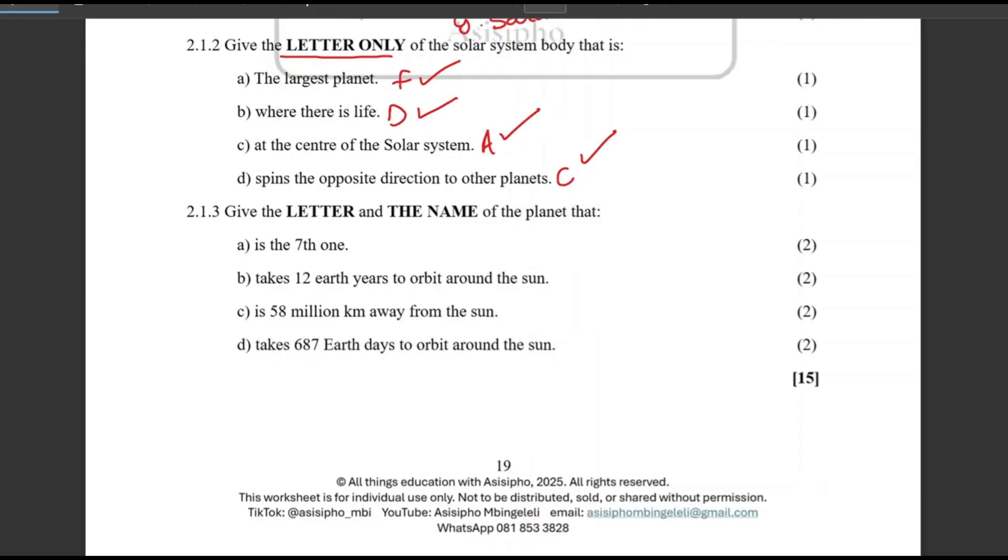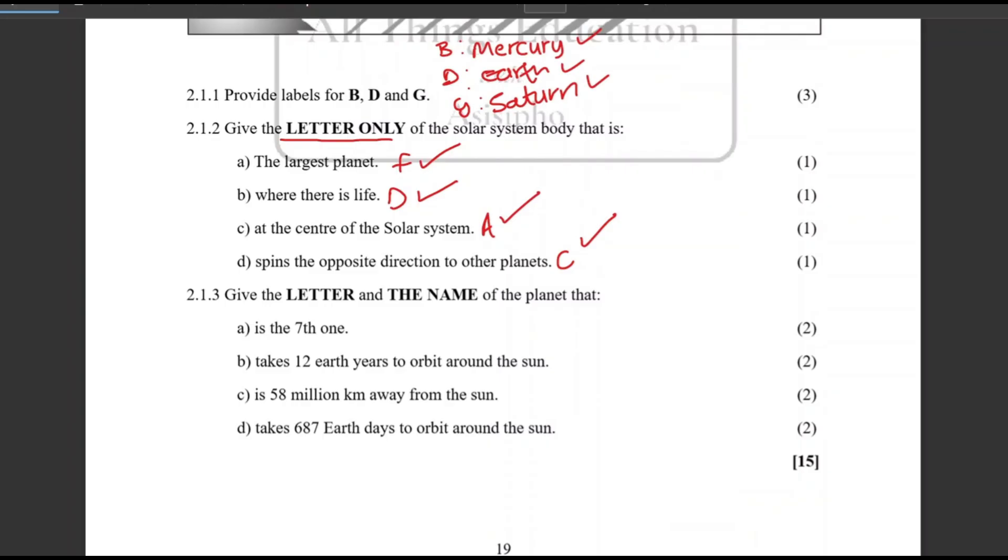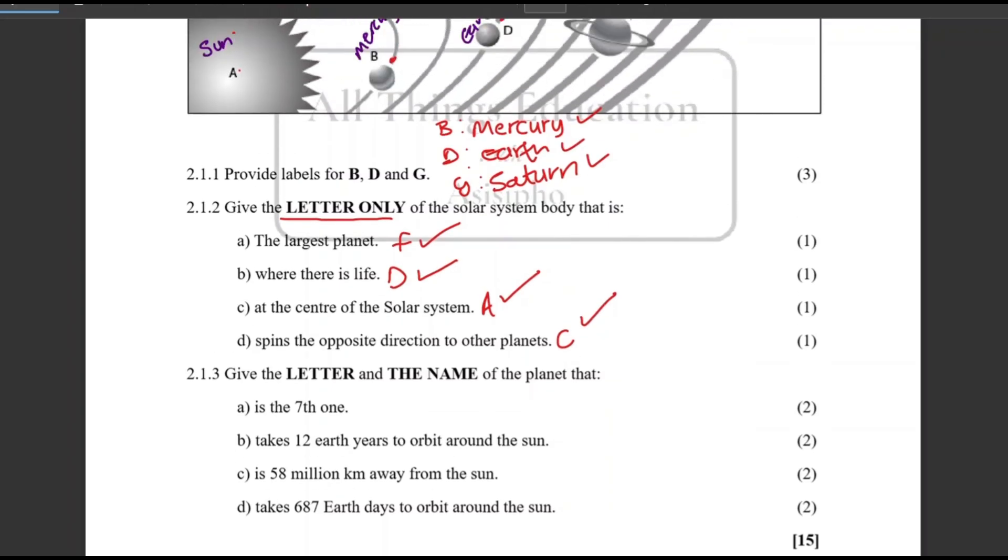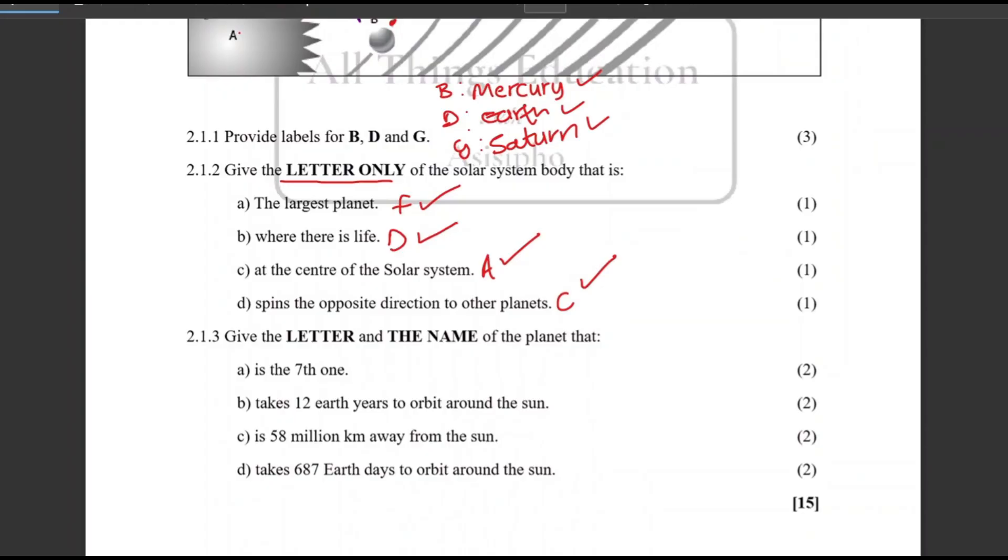For 2.1.3, give the letter in the name of the planet. Let's follow instructions, guys. I need us to read these questions and understand what they require from us. This one is asking us to give the letter and the name. The previous one was asking us to give the letter only. You are asked to give the letter in the name of the planet that is the seventh one. This is easy. So do we need to count together? Or am I wasting your time, guys? One, two, three, four, five, six, seven. That's Uranus. What letter is it? It's H. So H, Uranus. You've given the letter and the name.